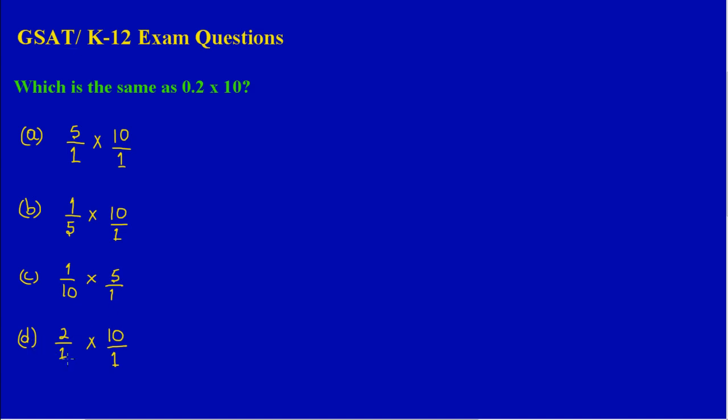And in D we have 2 over 1 times 10 over 1. Now by process of elimination, since 0.2 is multiplying 10, we would have known that since this is 1 over 10, then this would definitely be out, because the 10 is really when a number is written by itself it's over 1. So this could also be expressed as 10 over 1, so we're looking for something times 10 over 1, really not 10 in the denominator. If you look, the other three options have that.